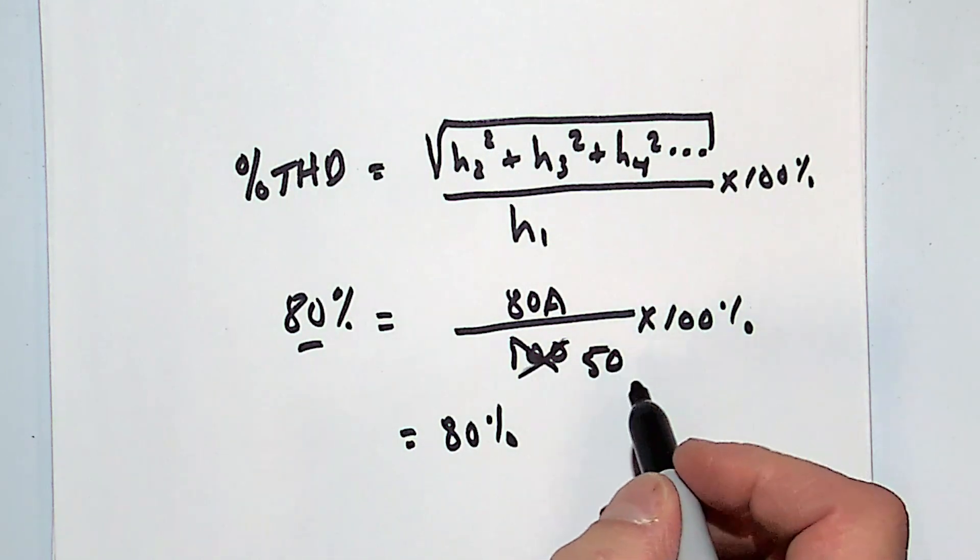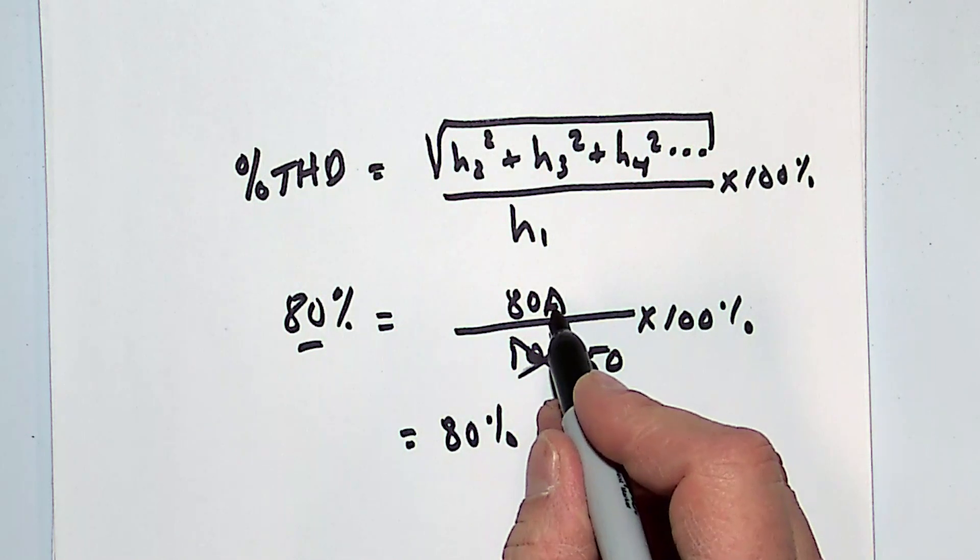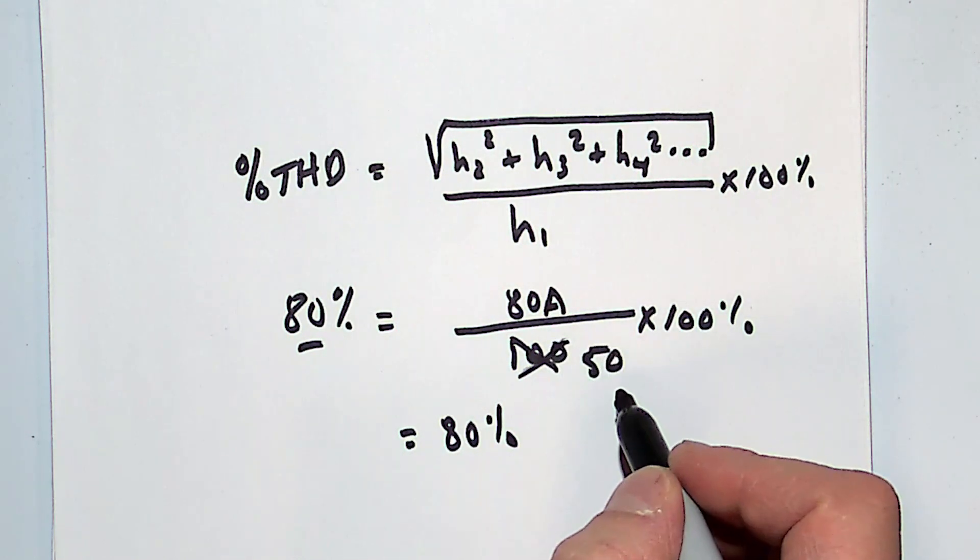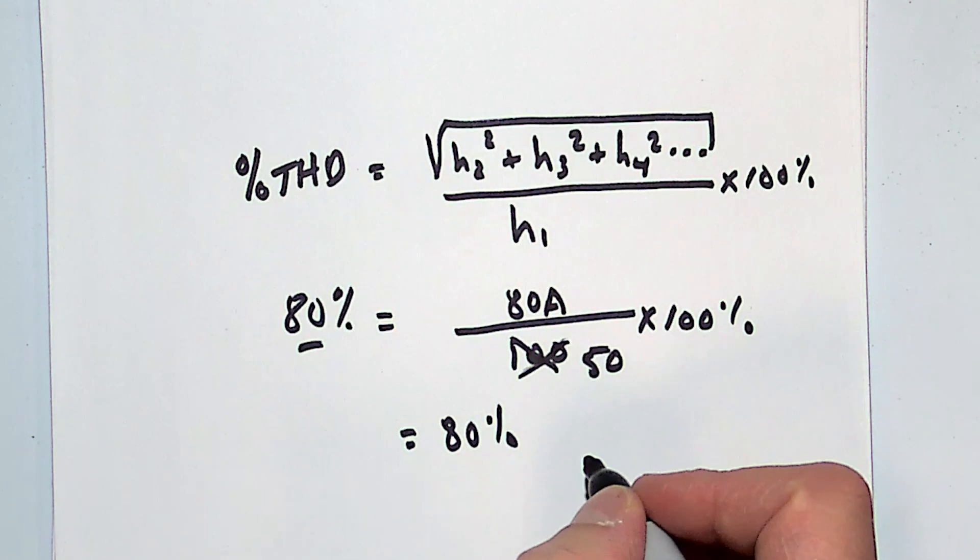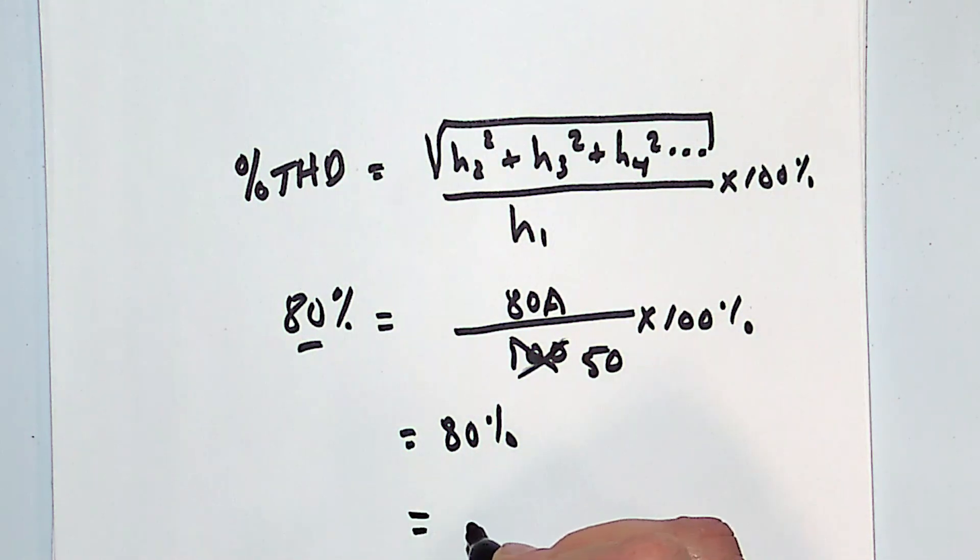Well, now I have a problem. My 60 hertz current is even less than my harmonic current, and my percent distortion is going to be even bigger, 160%.